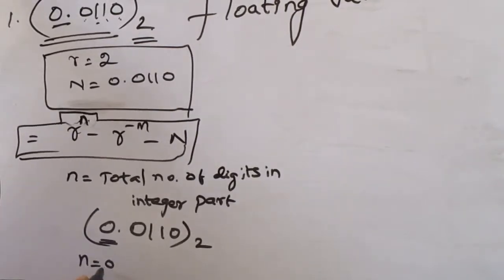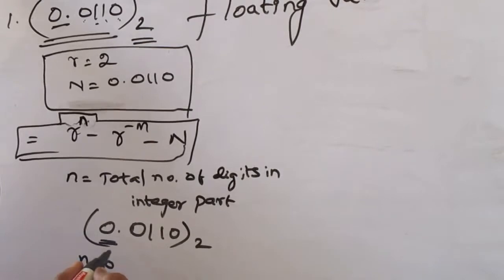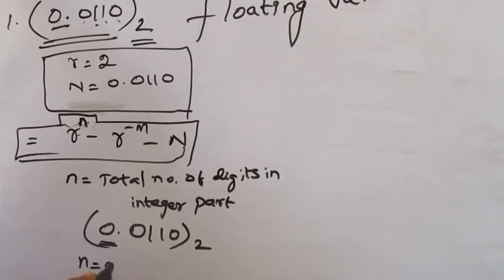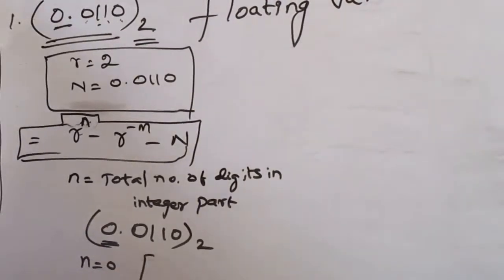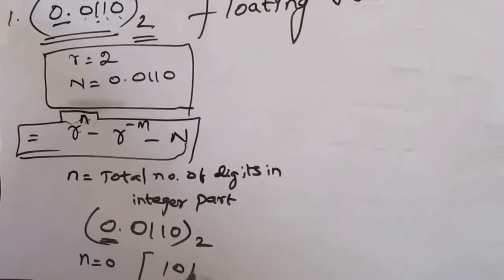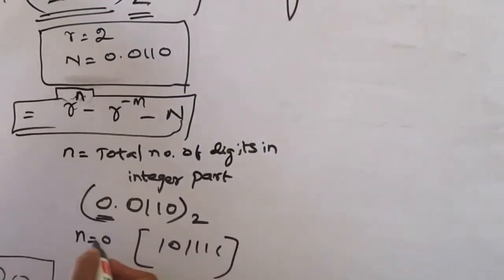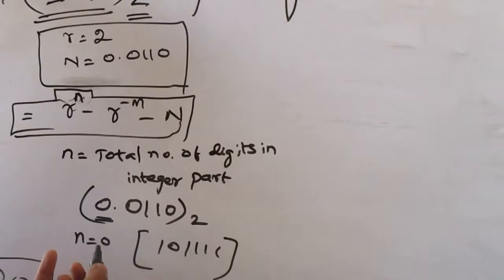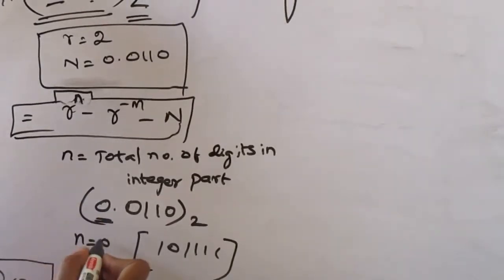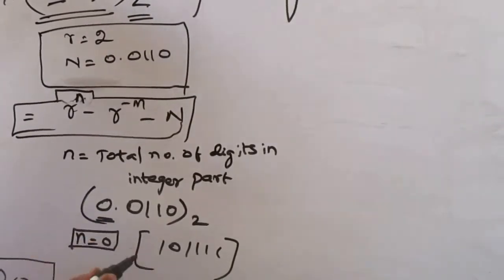We take the value in the integer part — there is no value there, so n is equal to 0. There is no integer value in this number. Integer means something like 1 0 1 1 1, but there is no integer part here because it is a floating value, so we take n is equal to 0.